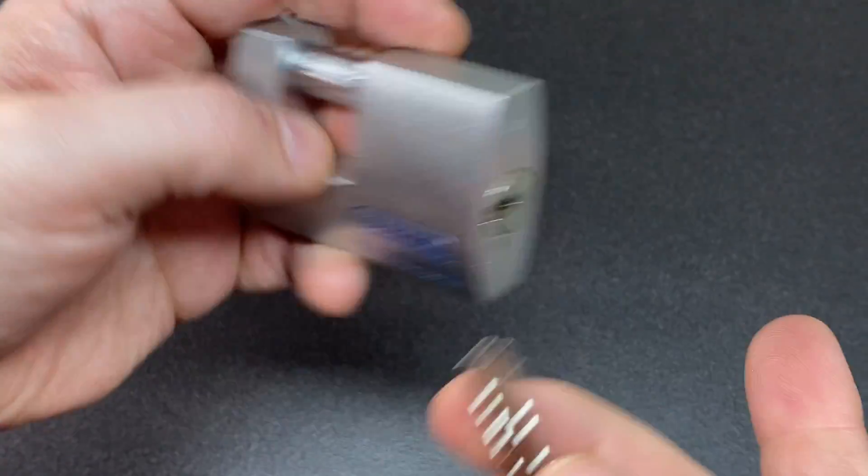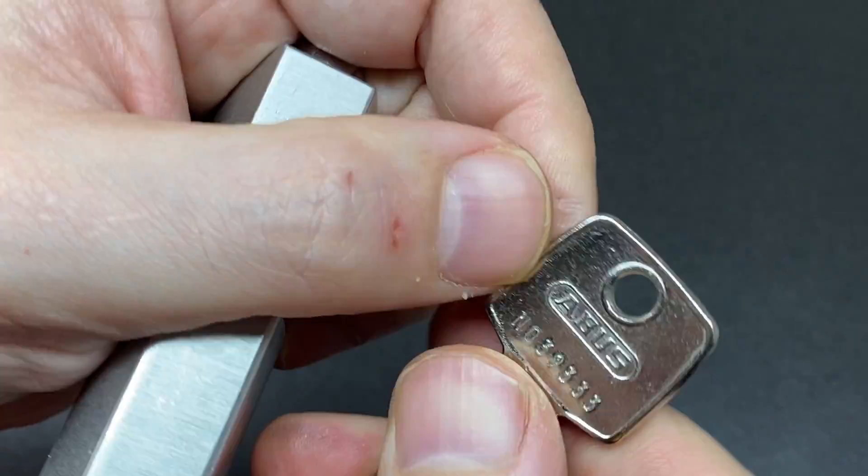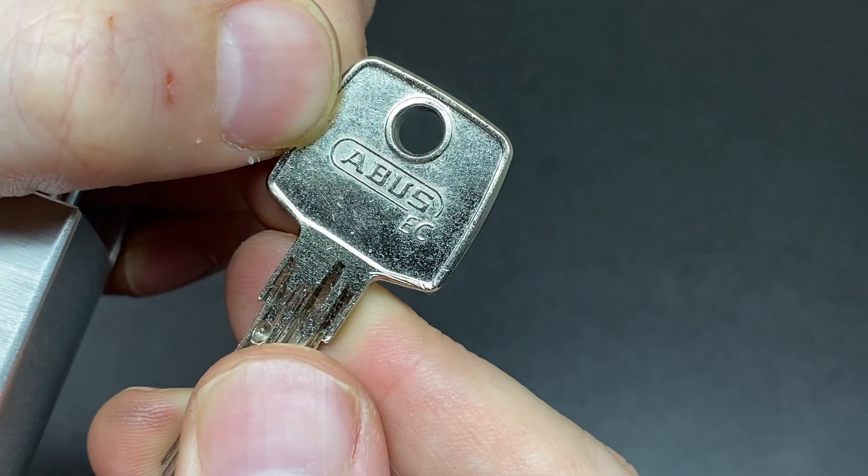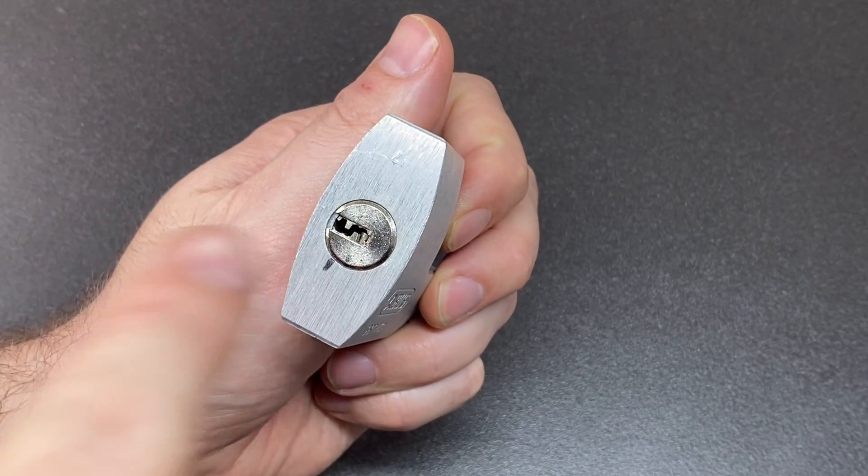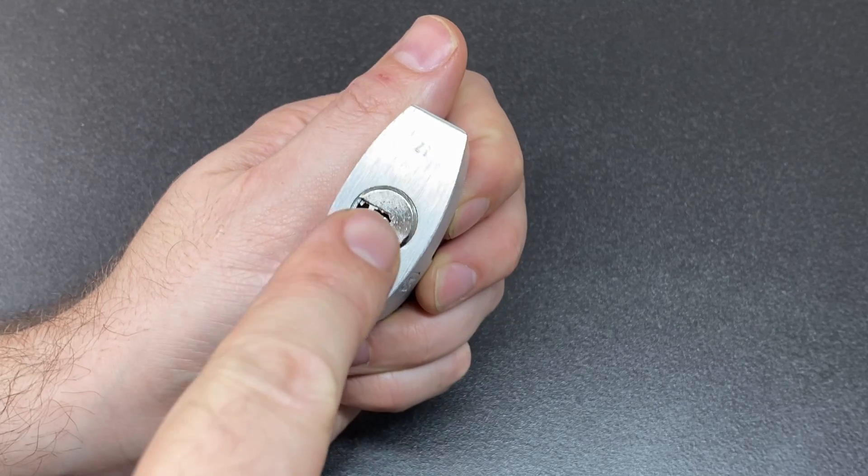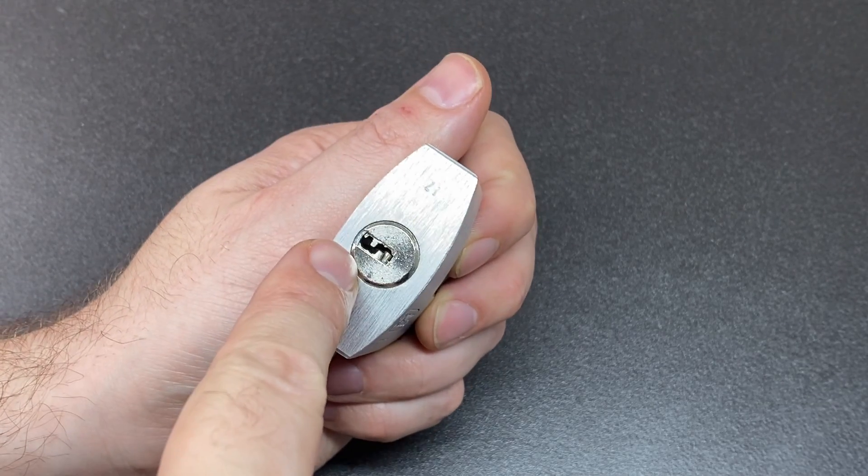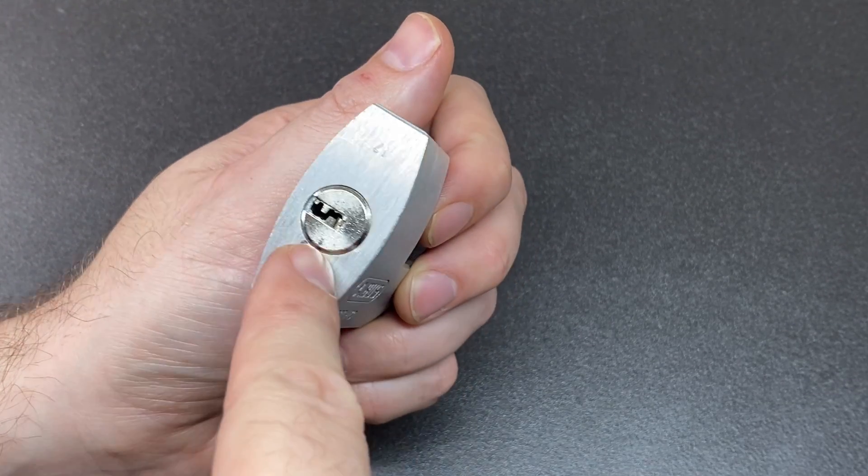The good thing about this lock is it has the extra class core, and because the extra class core is in the padlock, it makes it two, three, four times harder to pick, genuinely. If you've ever tried it, you'll know.